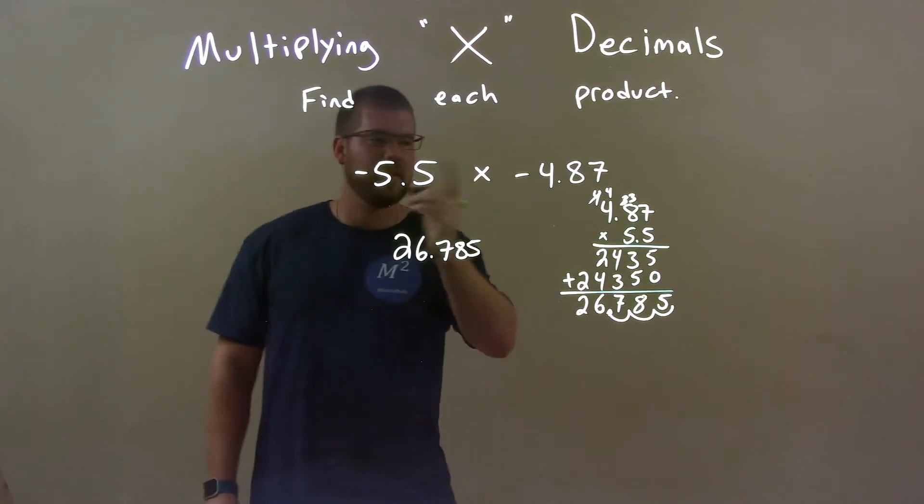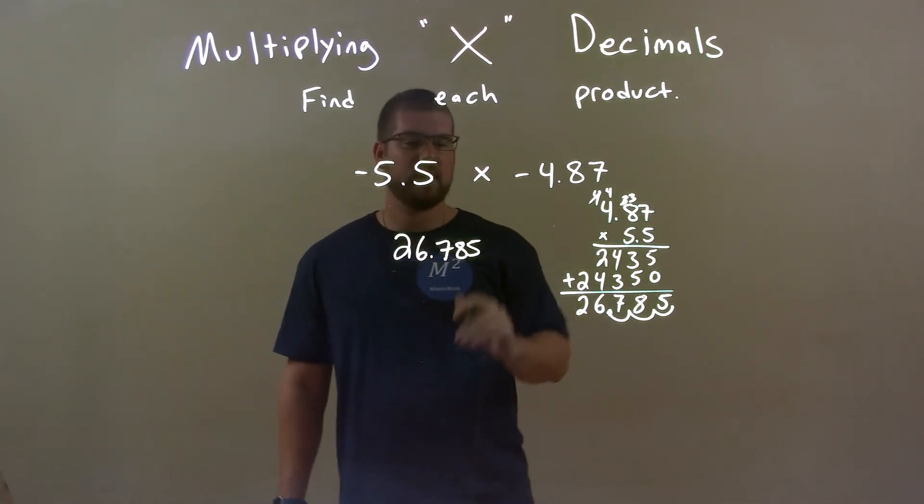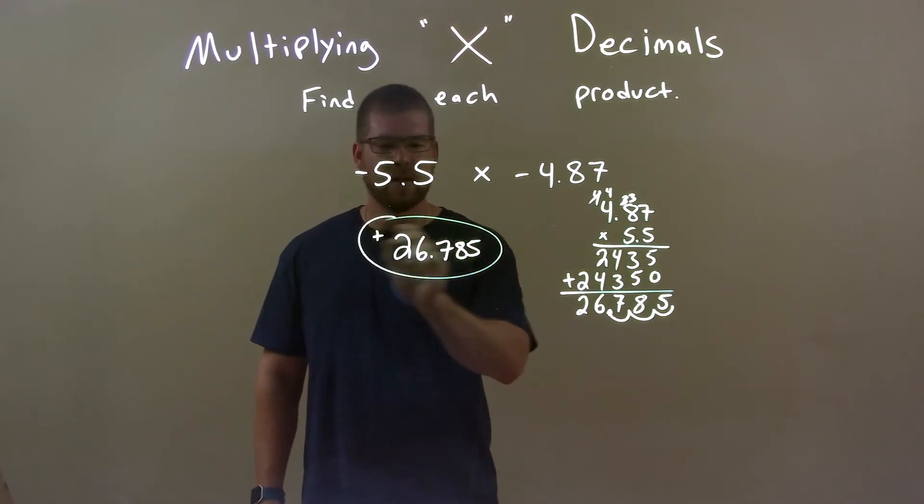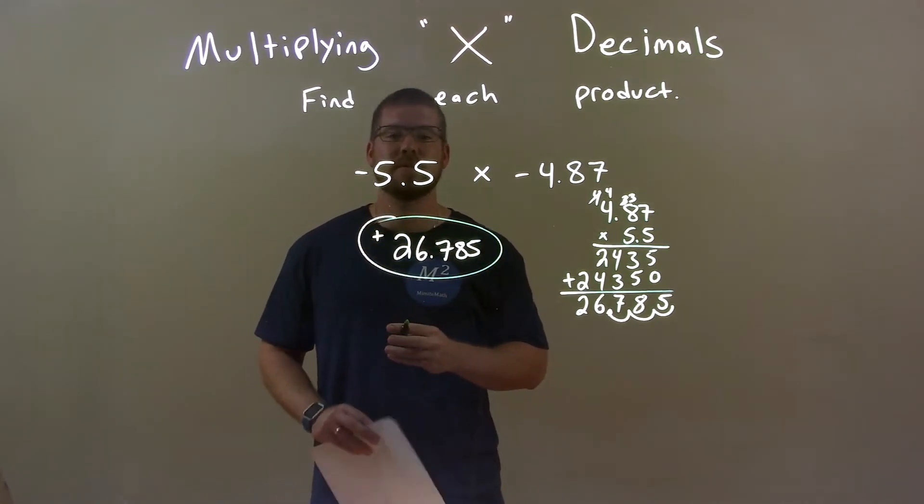Now, we have to look at the negatives. A negative times a negative is always a positive. So we have a positive here. Just to confirm, our final answer is positive 26.785.